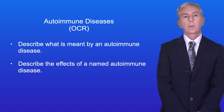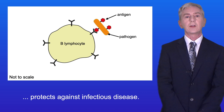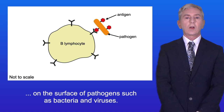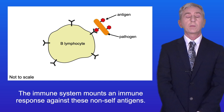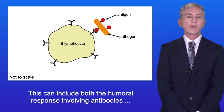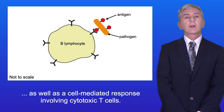So far on this topic we've seen how the immune system protects against infectious disease. We've seen that both B and T lymphocytes recognize antigens on the surface of pathogens, such as bacteria and viruses. These antigens are recognized as foreign or non-self, and the immune system mounts an immune response against these non-self antigens. This can include both a humoral response involving antibodies, as well as a cell-mediated response involving cytotoxic T cells.